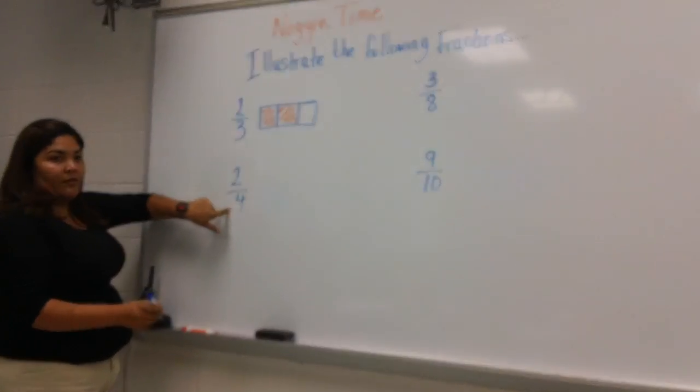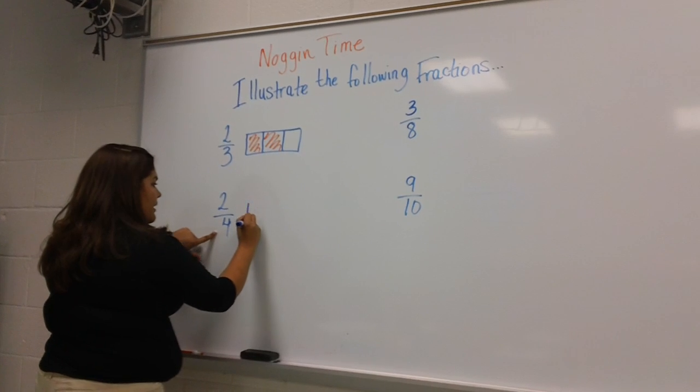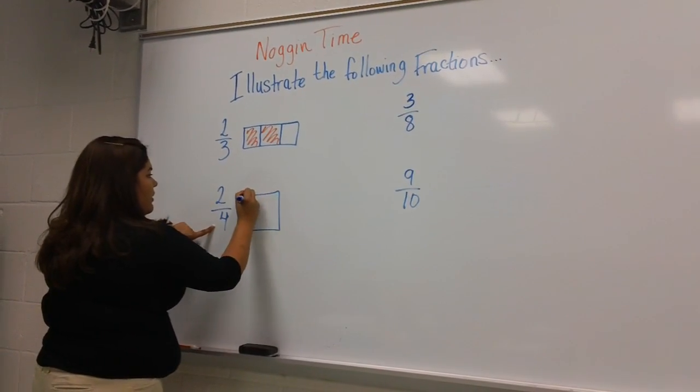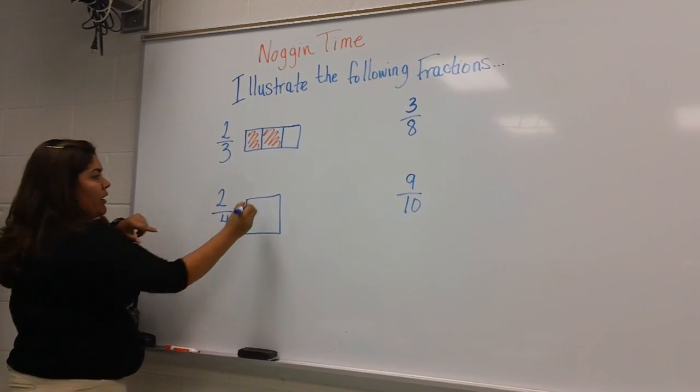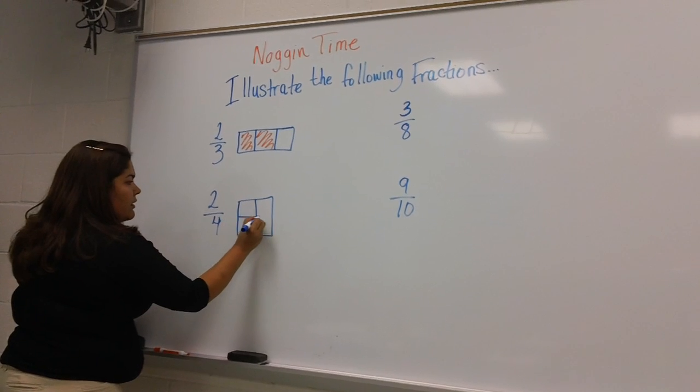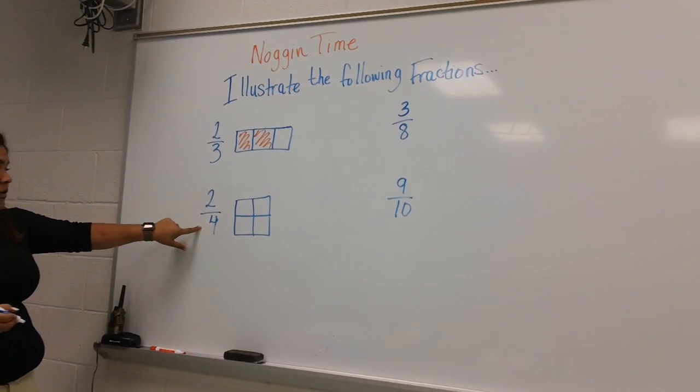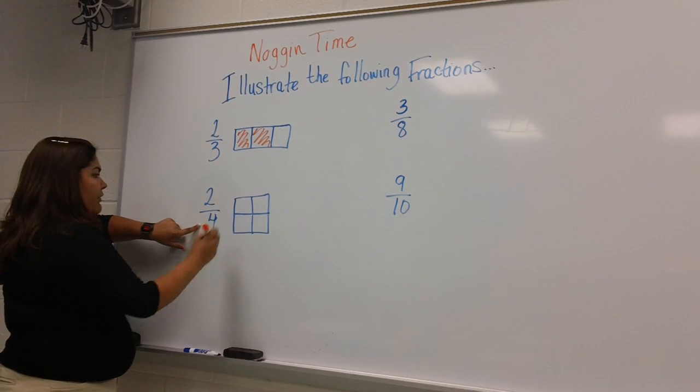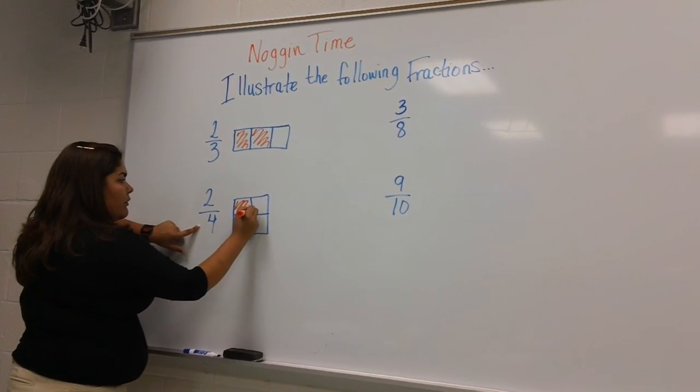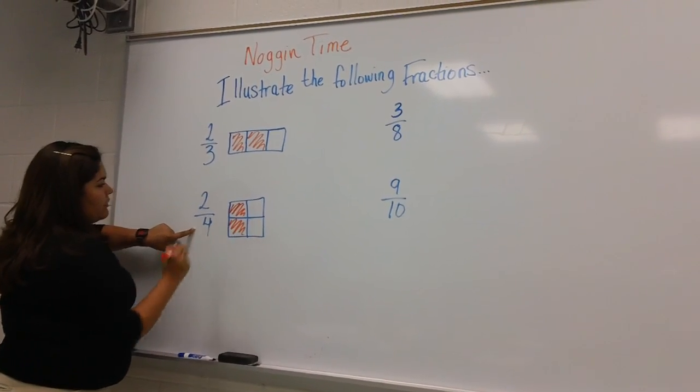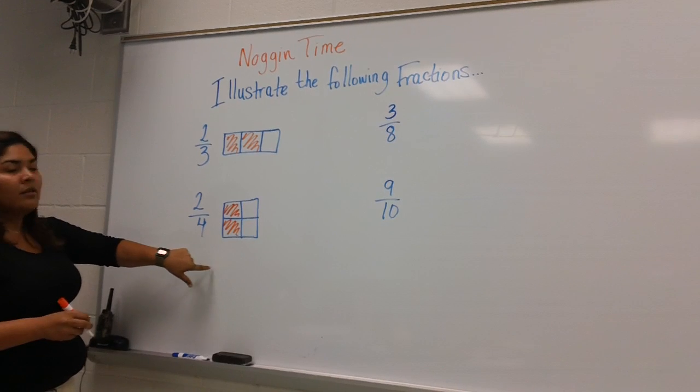The next one is two-fourths, so here we're going to make our whole and we're going to cut it into four parts. Our numerator is two, so we're going to take two of those parts to equal our fraction. One, two - two out of the four, two-fourths.